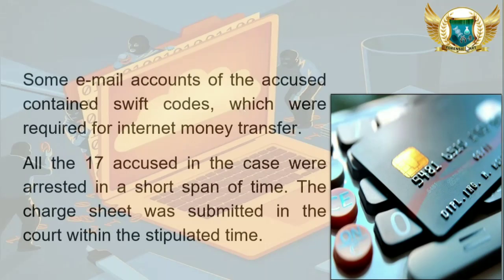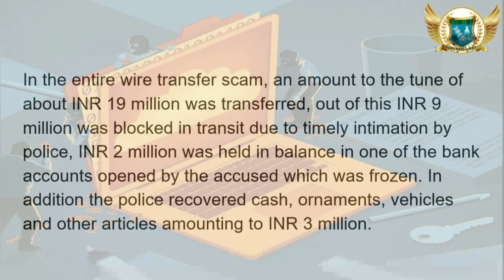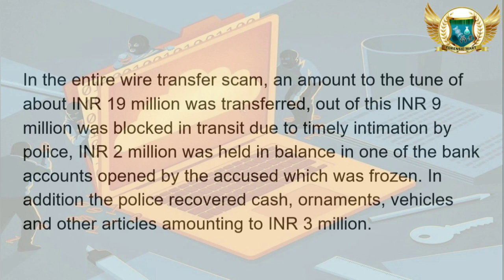Some email accounts of the accused contained SWIFT codes, which were required for internet money transfer. All 17 accused in the case were arrested in a short span of time, and the charge sheet was submitted in court within the stipulated time. In the entire wire transfer scam, an amount of approximately INR 19 million was transferred. Of this, INR 9 million was blocked in transit due to timely intervention by police, INR 2 million was held in balance in one of the bank accounts opened by the accused and was frozen. Additionally, the police recovered cash, ornaments, vehicles, and other articles amounting to INR 3 million.